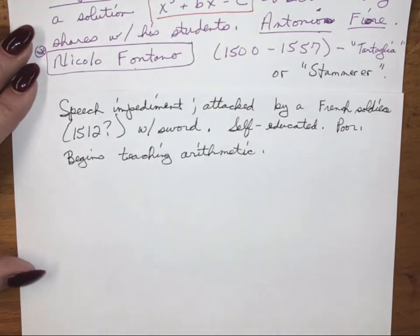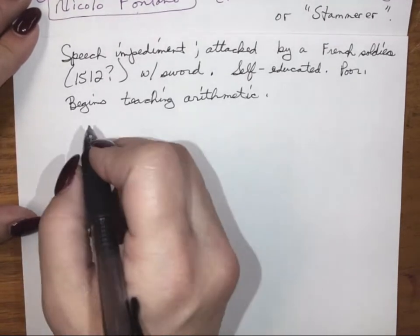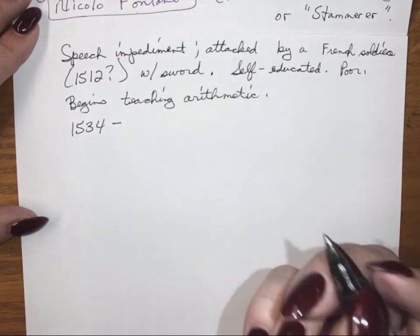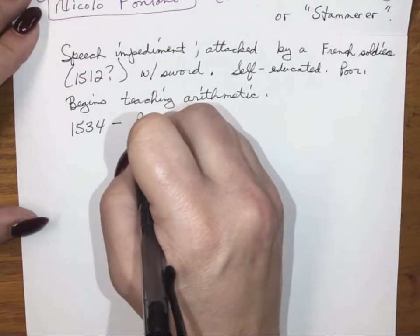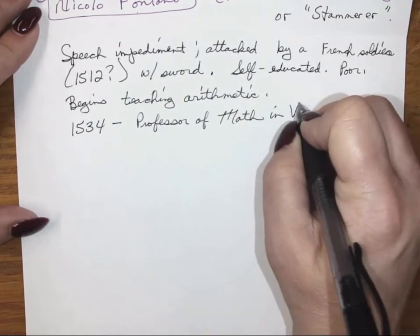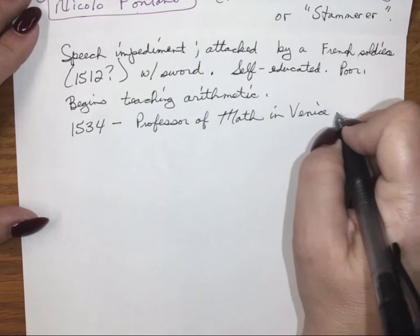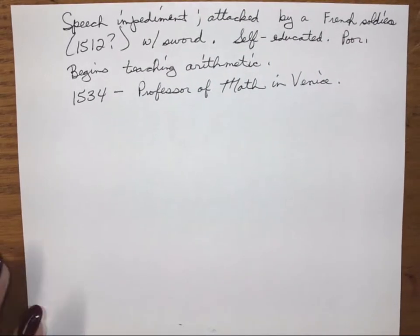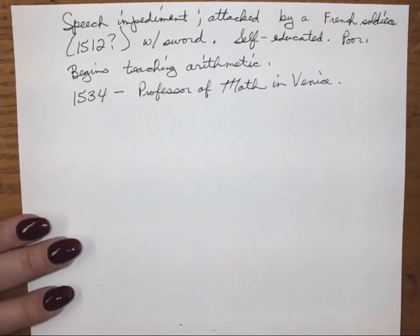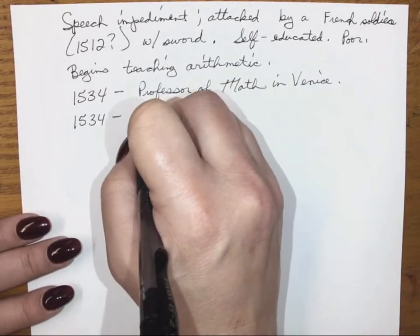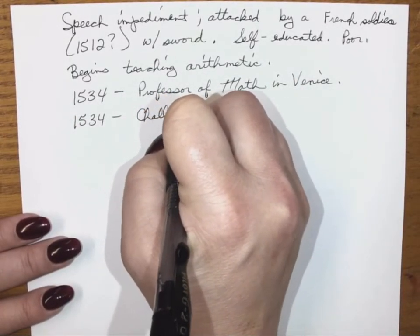In 1534, when he's about a little over 30 years old, Tartaglia becomes a professor of mathematics in Venice. His speech impediment isn't really holding him back — he's able to make a living teaching math. And in 1535, Tartaglia is challenged to a math contest.